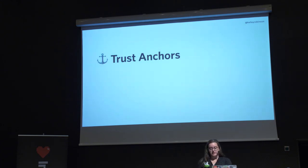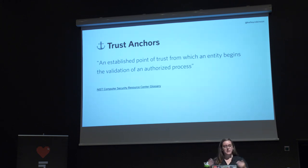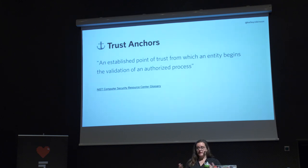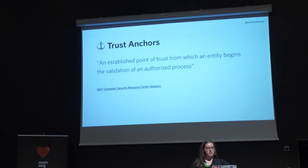I want to talk about trust anchors and how they relate to authentication. In cryptographic systems this generally refers to public keys linking to a chain of trust, but I'm using it as a more generic term. A trust anchor is an established point of trust from which an entity begins the validation of an authorized process. This relates to a lot of what we do with identity — we're basically going back to a form of identity that we do trust and basing our other forms of identity and therefore authentication on top of that.